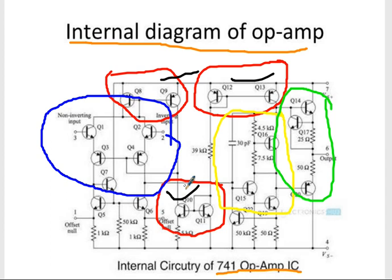The difference will be amplified and the level will be shifted. This output is driving here, and this emitter output is driving this. These two form the output stage, which is like a common-collector configuration — a Darlington pair, NPN and PNP type. This is your output.